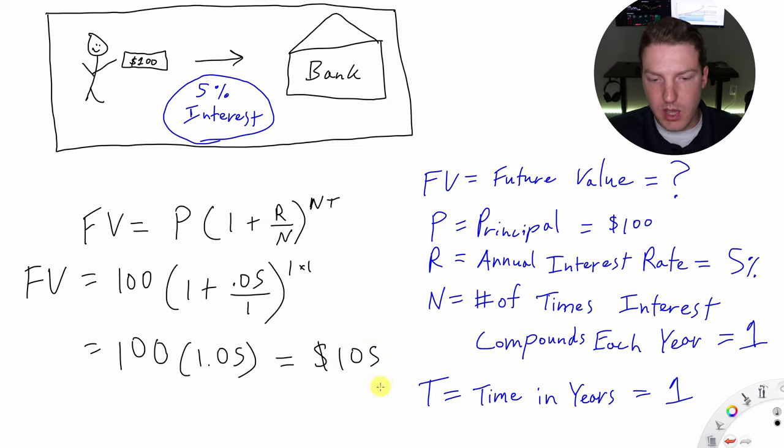In this case, that's really simple. The interest rate that we've earned, the effective annual interest rate is just 5% because we earned $5 on $100.